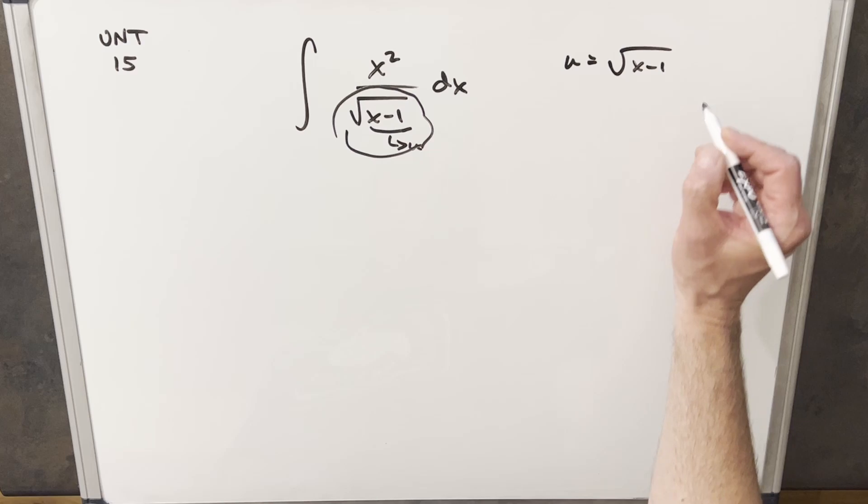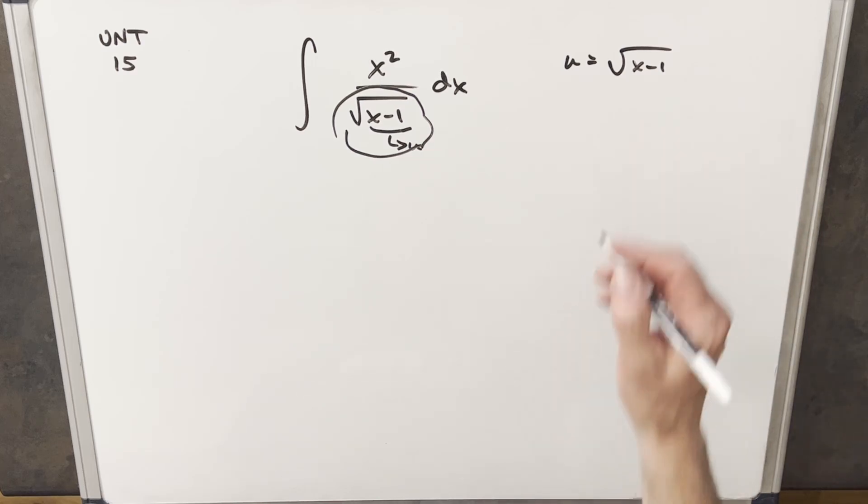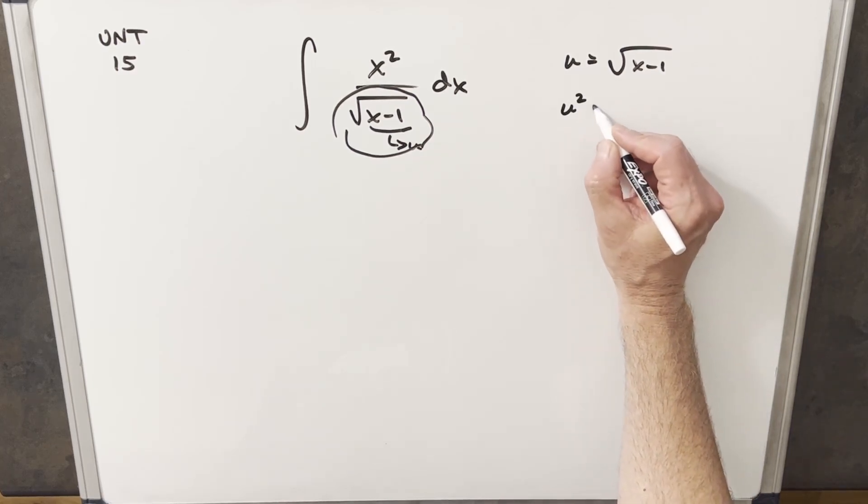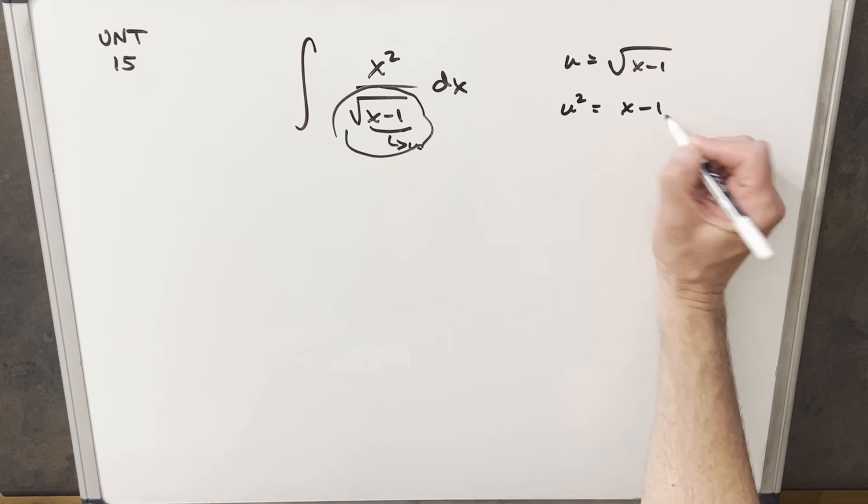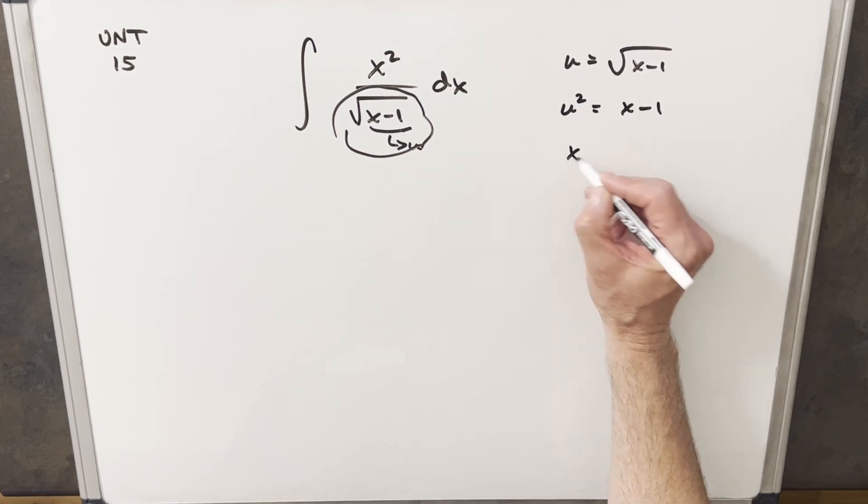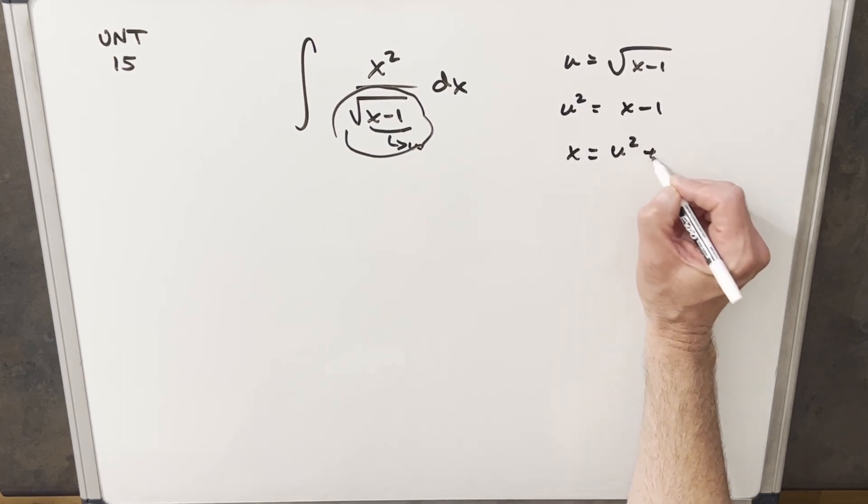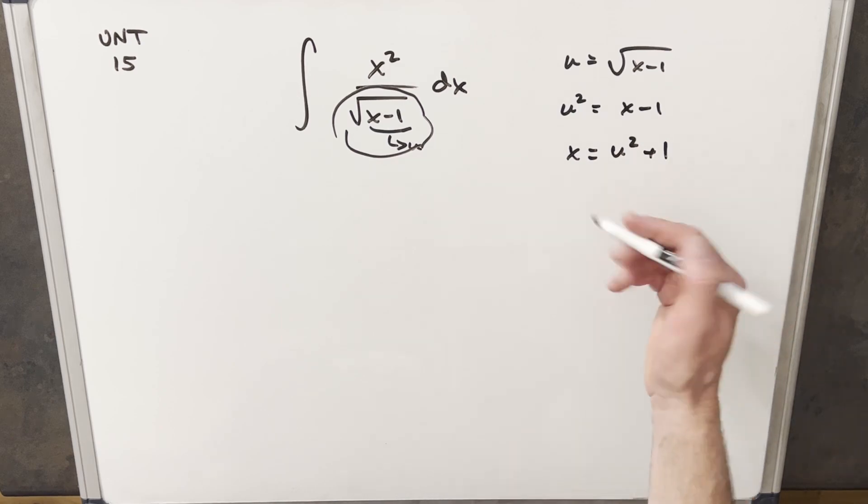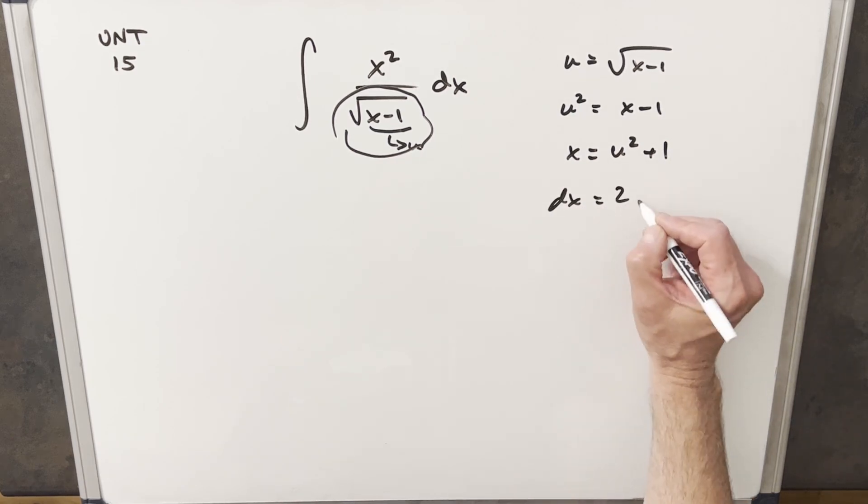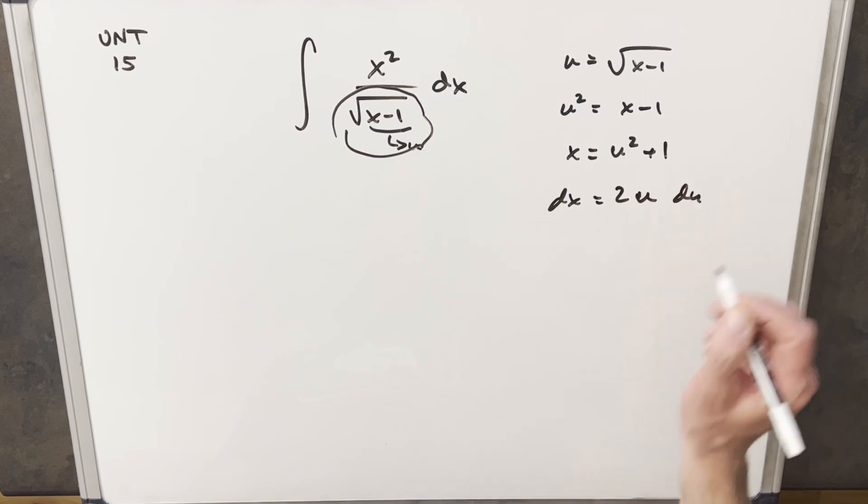We'll call our u equal to the square root of x minus 1. And while I'm at it, I think we'll find some other values. We'll square this. We'll get u squared equals x minus 1, and we can solve for x. x is going to be u squared plus 1. I'll take a derivative to get my dx, so the derivative of this is going to be 2u du.